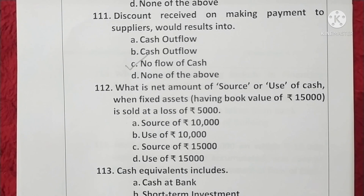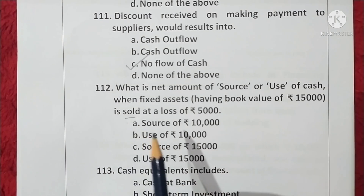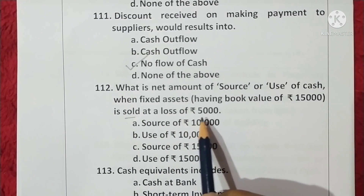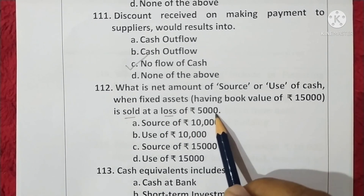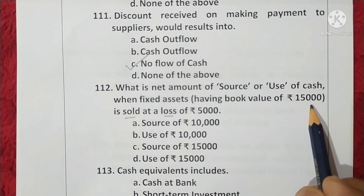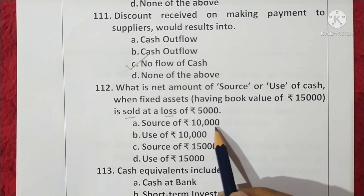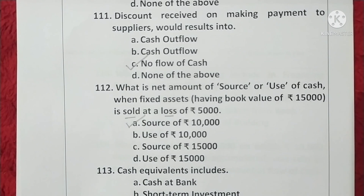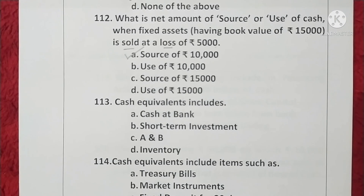Question 112. What is the net amount of source or use of cash when fixed assets having book value rupees 15,000 is sold at a loss of rupees 5,000? Loss is deducted: 15,000 minus 5,000 equals 10,000 source of cash. Option A is correct. Question 113. Cash equivalents include cash at bank and short-term investments — options A and B. Option C is correct.